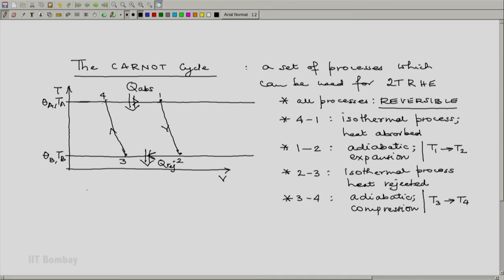The corresponding symbolic diagram for this would be something like this. Let this be the engine. Let me call it the Carnot cycle engine.